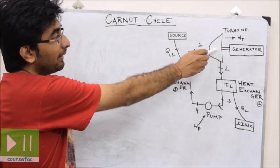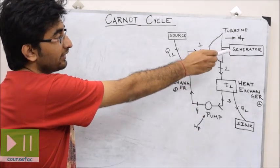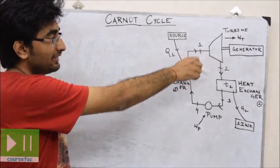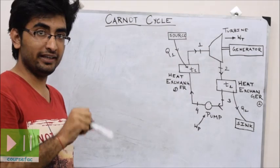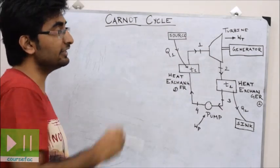The turbine is connected to a generator. When the rotor of the generator rotates, electricity is produced.